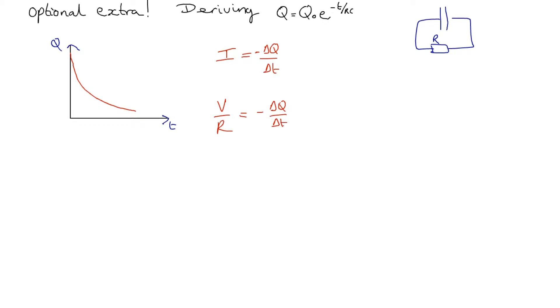V is the potential difference across the capacitor. Because Q equals VC, we know that V equals Q/C. So we can rewrite that as Q/(CR) equals -ΔQ/ΔT.